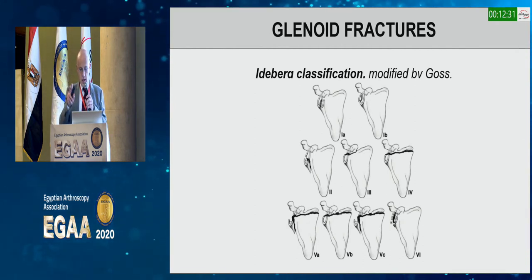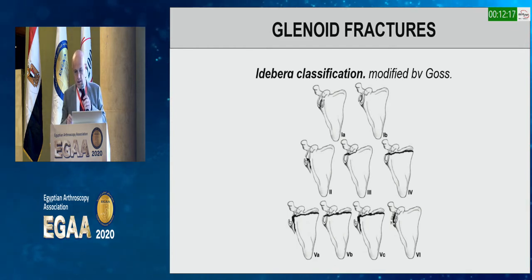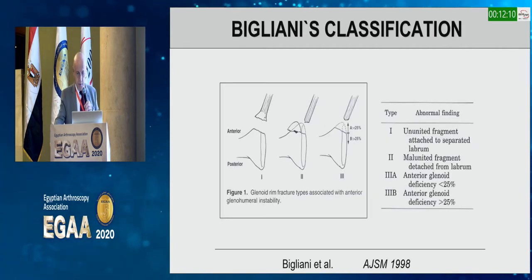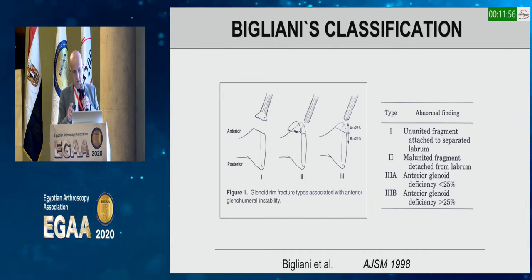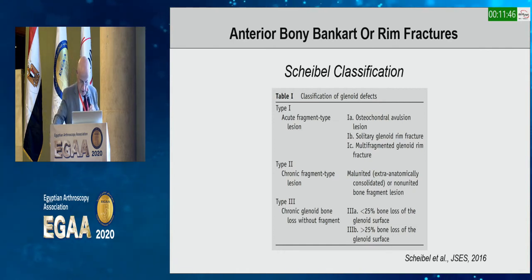The Ideberg classification — modified by Goss — shows type 1 involving the glenoid rim, type 2 involving the body and extending along the spine, and more complicated fractures through types 5a, b, c, and 6. Bigliani described the avulsion classification with types 1, 2, and 3, which may include just the labrum and capsule, significant displacement, or total avulsion with bony deficiency. Marco Scheibel also contributed a classification including acute, chronic, and chronic with or without fragment dislocation.